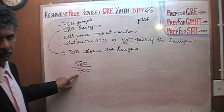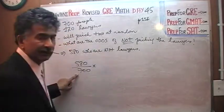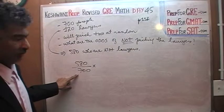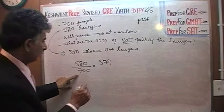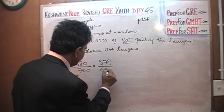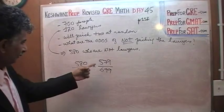Out of a total of 700 people. After we've picked the first person, we no longer have 580 non-lawyers left - we have 579 non-lawyers out of 699, because we already picked one person. Those are the odds.